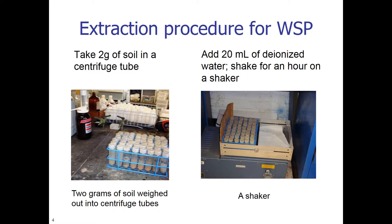Let us now move into the extraction procedure for water-soluble P, also heard as water-extractable P. What we do is take 2 grams of soil in centrifuge tubes — you weigh 2 grams into a centrifuge tube, as you can see in the diagram to the left. Then add 20 ml of deionized water, or double deionized water, and shake for an hour on a shaker. The centrifuge tubes can be tilted so that you get an end-to-end shaking of the water-soluble P with the soil and the water.